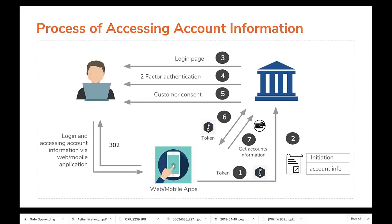Let us now have a look at the main steps involved in a TPP's journey. The three main stakeholders are the payment services user or end user, the bank, and the third-party provider. First, the PSU needs to sign in with the TPP application and request to view account information. Prior to this step, the TPP should be registered with a bank, must create an application, and be subscribed to the relevant APIs.